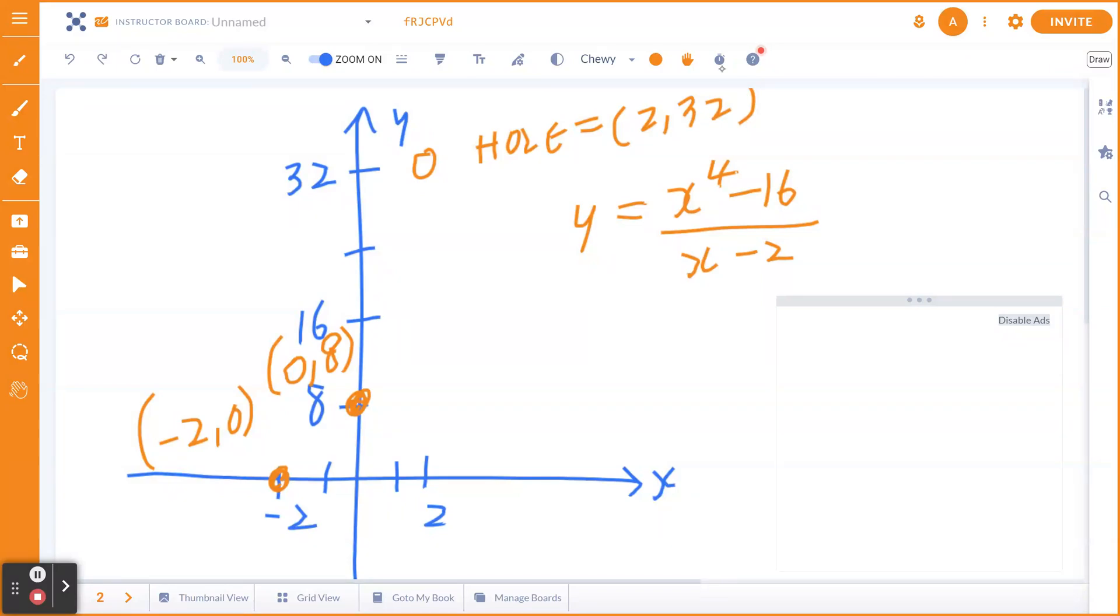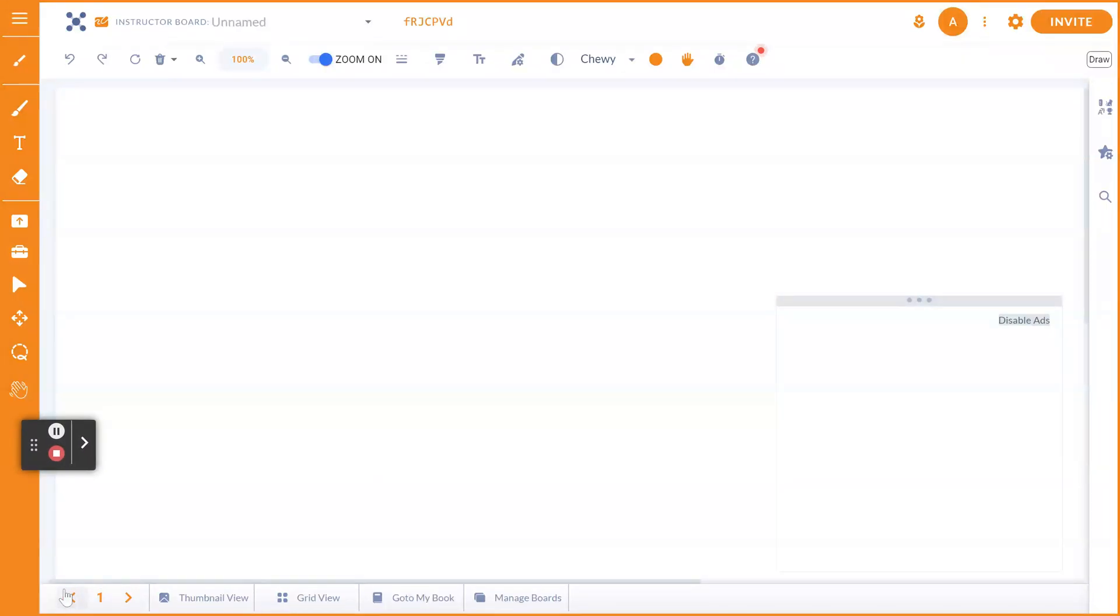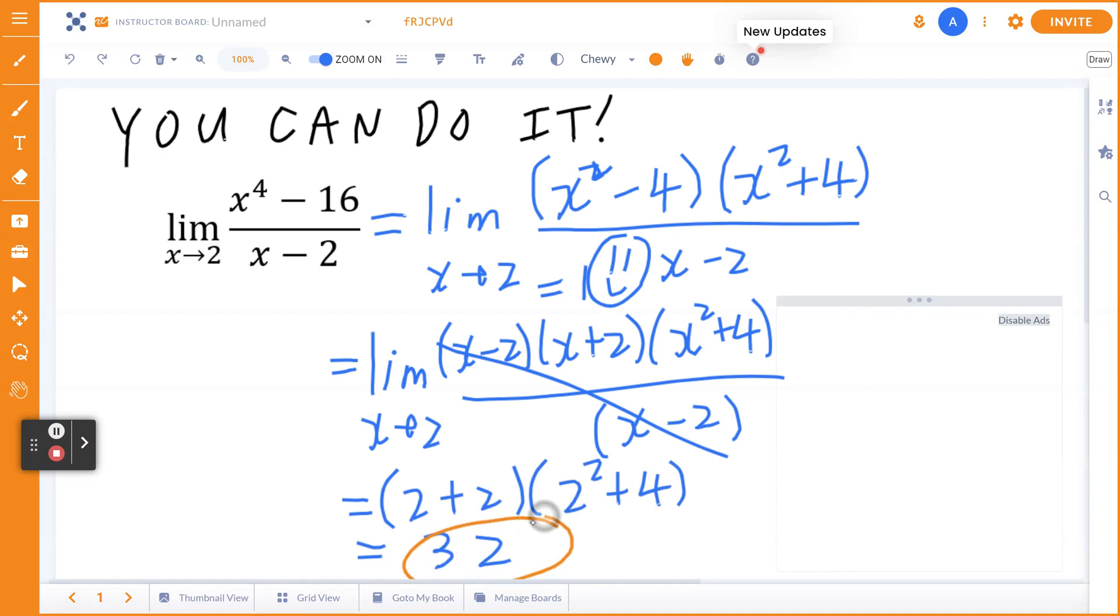And again, if you graph this, it's going to roughly speaking look something like that, right? And again, if you look at the left limit and the right limit as x is approaching 2, it will give you exactly 32, which is what we did on the first page, as expected. I hope this makes sense.